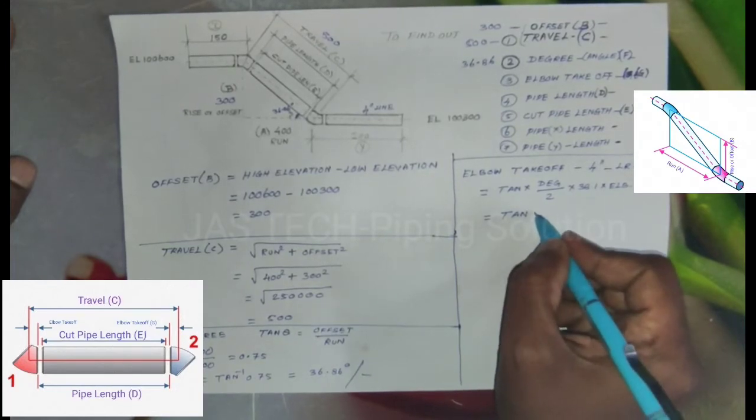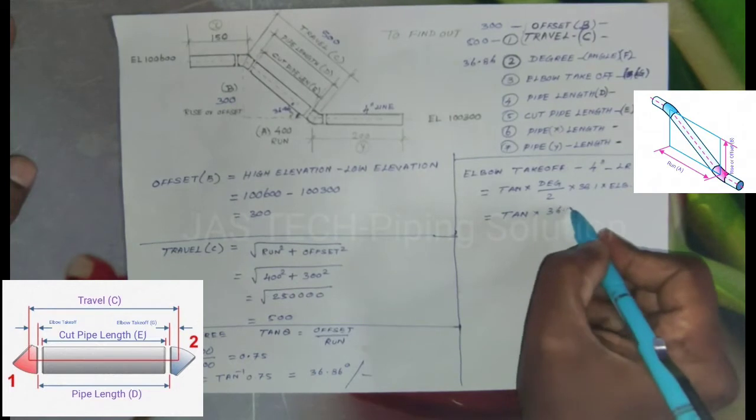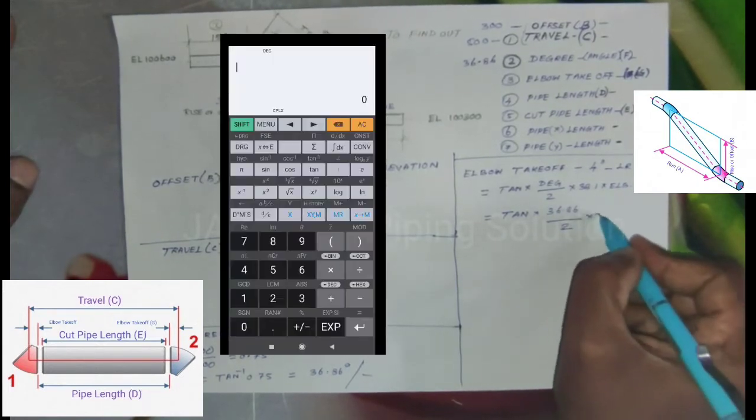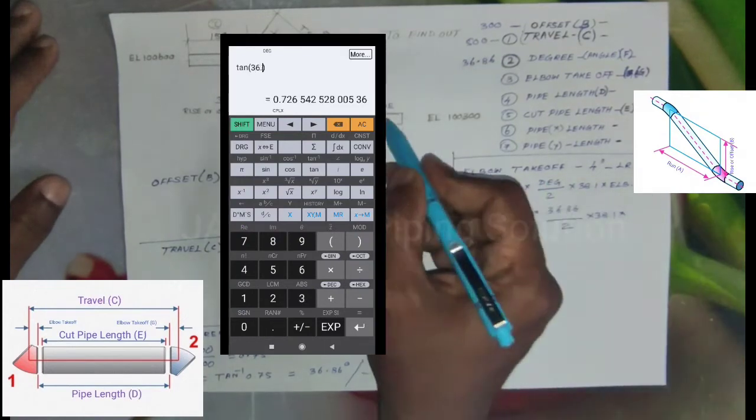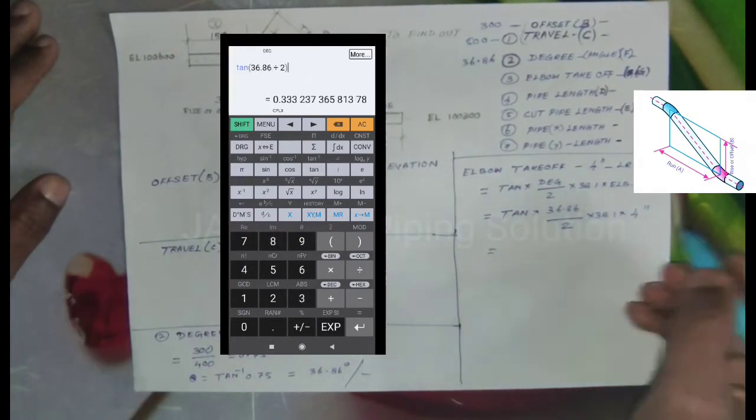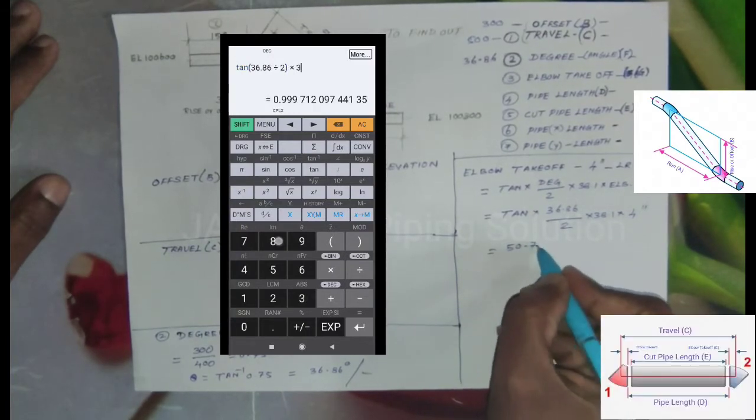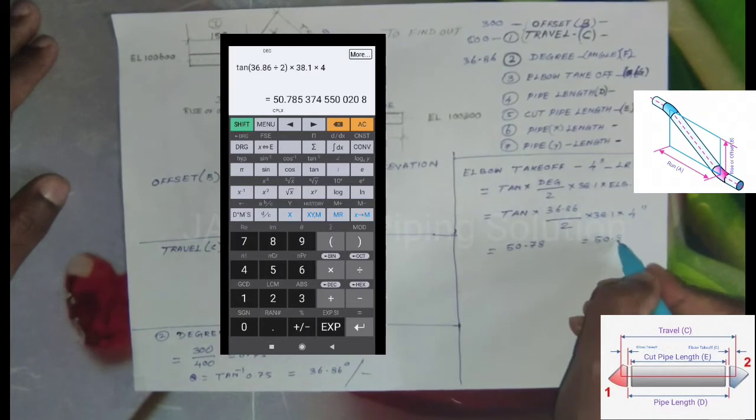So tan multiplied by our degree 36.86, divided by 2, multiplied by 38.1, multiplied by our elbow size 4 inch. The result is 50.78.